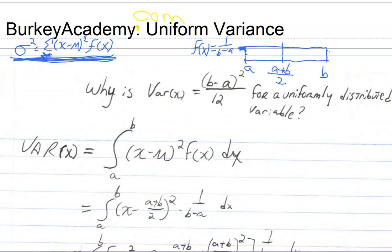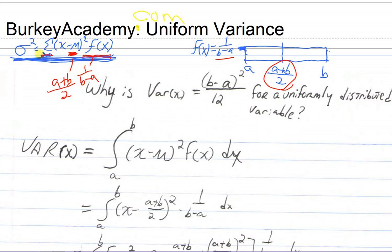There are three things we need to do. First, we can't do a regular discrete sum. Second, we're going to replace mu, the mean, with what the mean is for a uniform distribution — that's (a + b) / 2. Third, we're just going to plug in f(x) — well, what is f(x)? It's 1 over (b minus a). So those are really the three changes: replace the sum with something continuous, replace the mean with (a + b) / 2, and replace f(x) with 1 over (b minus a).